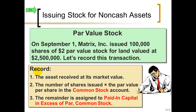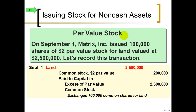Let's sell some more stock, but this time not by collecting cash — instead getting land in exchange. The land is worth the same $2.5 million. What goes into the common stock account is still the $2 par value times the number of shares issued. Basically the same journal entry, except land is debited instead of cash, with common stock at par and anything extra over par going into paid-in capital in excess of par value.